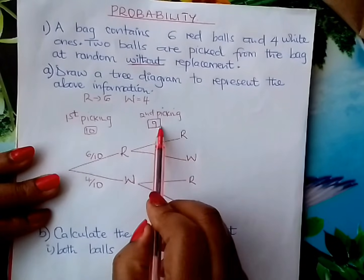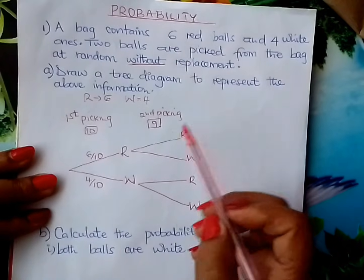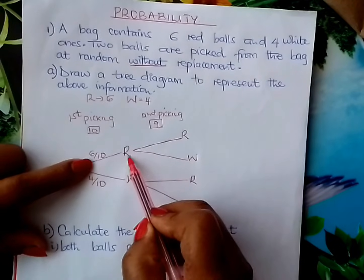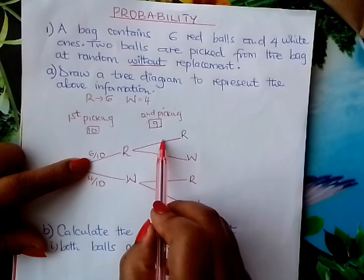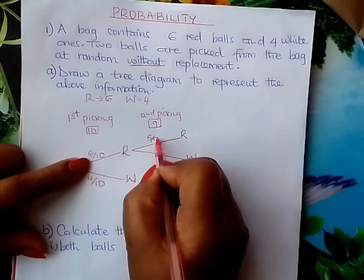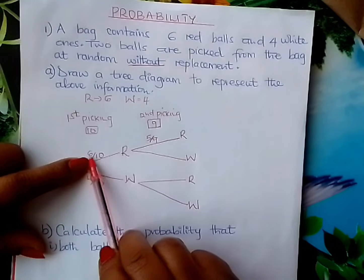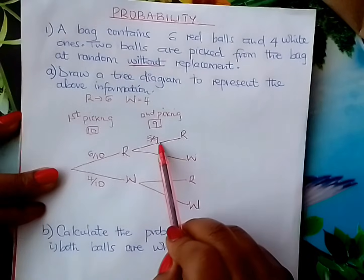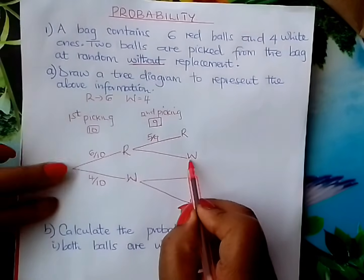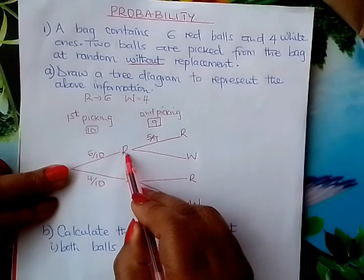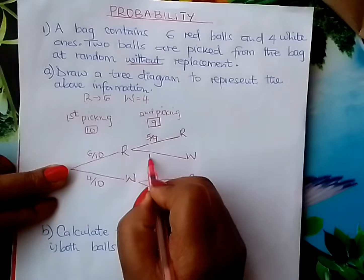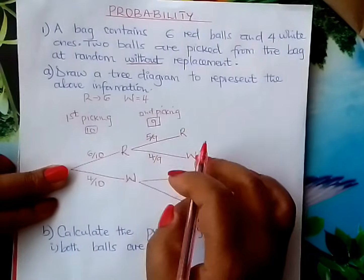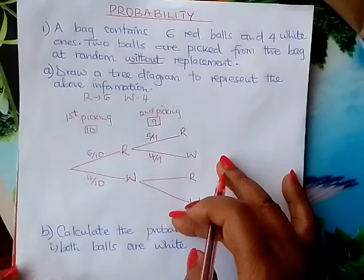What is the probability of picking a red ball if you had picked a red ball first? The probability of picking another red now would be 5 out of 9, because you picked one red without replacement and are left with 5 red balls out of 9. The probability of picking a white is still 4 out of 9, since you had not picked any white in the first picking.